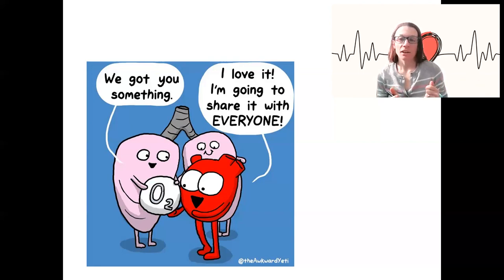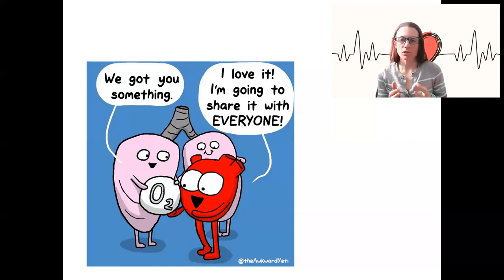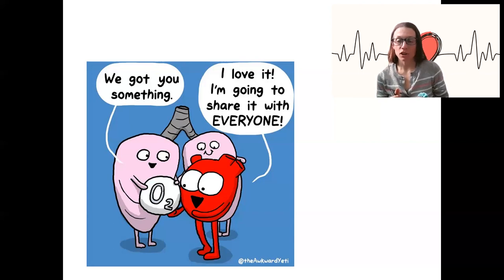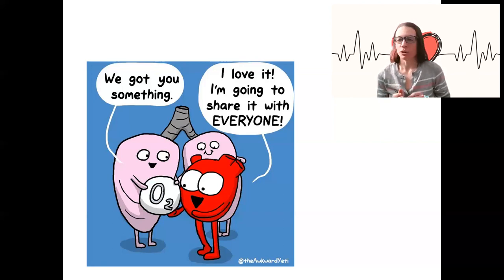We'll discuss regulation of cardiac output — both heart rate and stroke volume. Stroke volume refers to the strength of contraction, and heart rate is the number of contractions in a time period. Both can be regulated by the autonomic nervous system — sympathetic and parasympathetic — stimulating the heart directly.